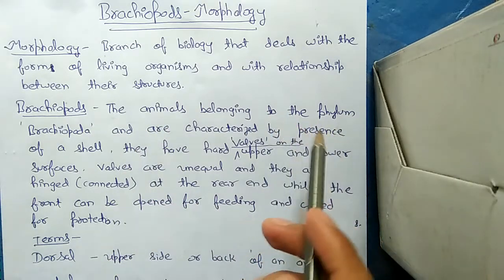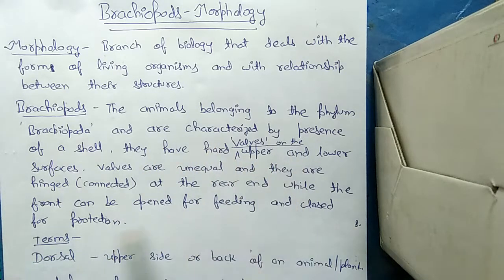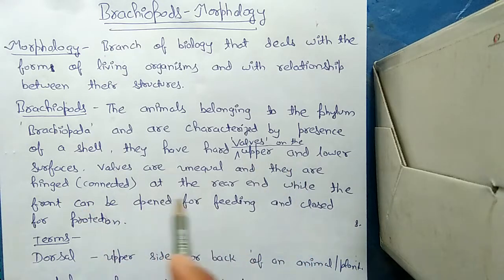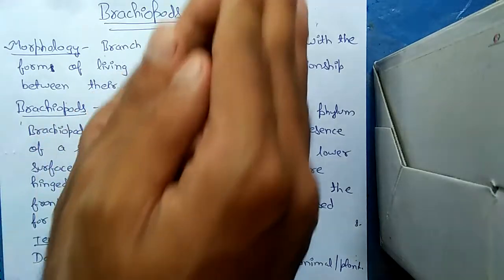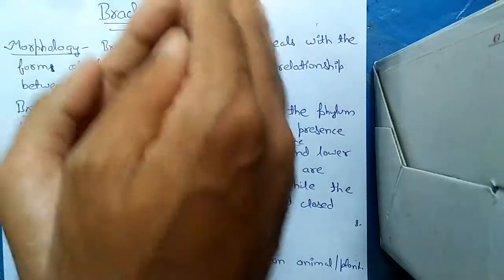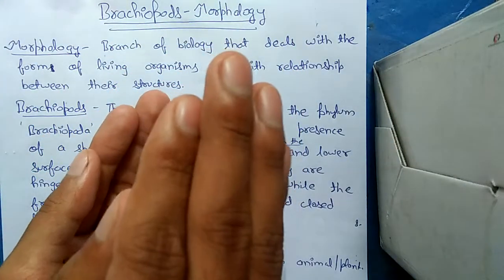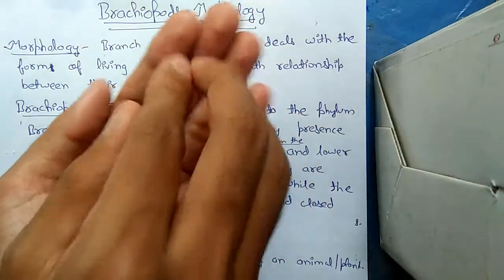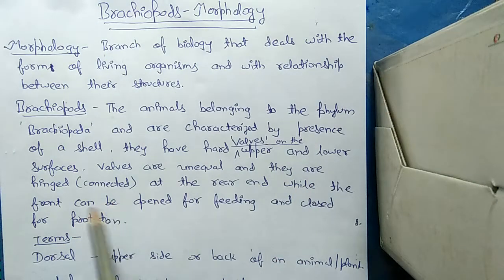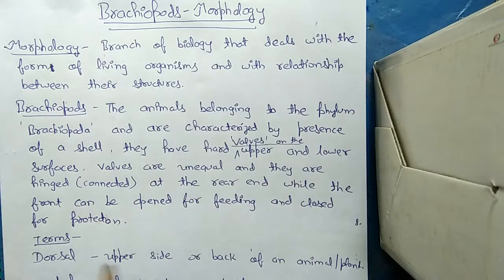What are brachiopods? Brachiopods are animals belonging to the phylum Brachiopoda, characterized by the presence of a shell. They have hard valves on the upper and lower surfaces. Both valves are connected at the hind end, and the front part can open for feeding and close for protection. The two valves are unequal — one is bigger and another is smaller — and they are hinged at the rear end.